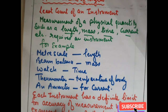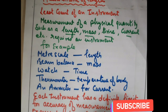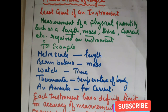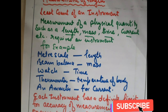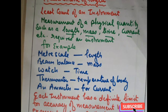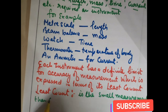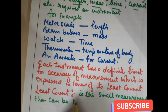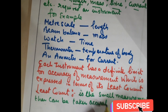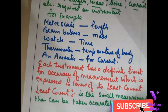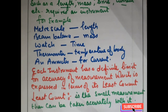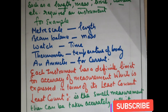Now, what is least count? Least count is the smallest measurement that can be taken accurately with an instrument. Every instrument has a different least count. Smaller the least count of an instrument, more precise is the measurement made by using it.